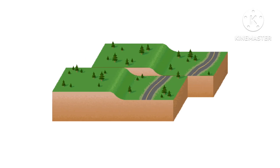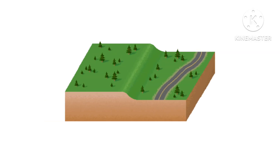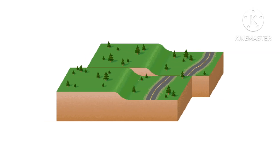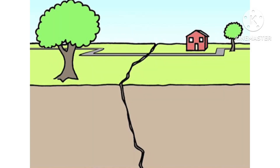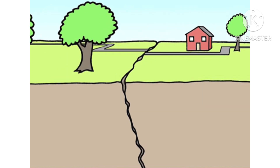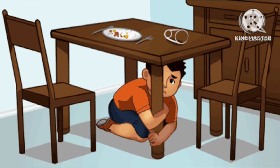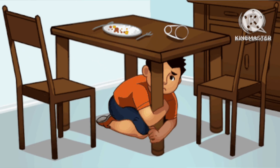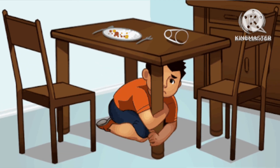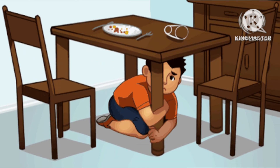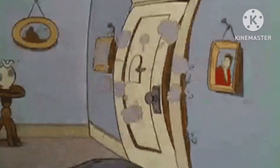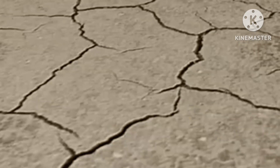An earthquake is an occurrence where tectonic plates slip past one another, creating waves that travel through the earth's rock. Earthquakes can range from a small tremor to a wild motion capable of shaking buildings apart and causing open cracks on the ground.